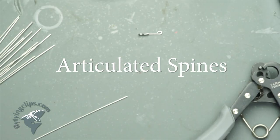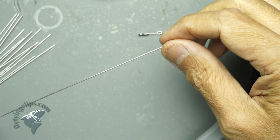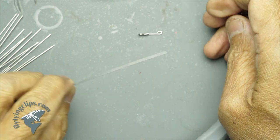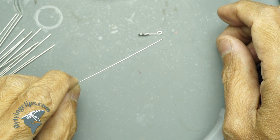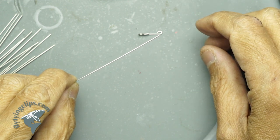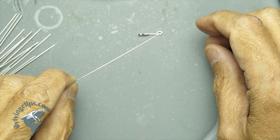I wanted to share with you a way to make your own articulated spines for the game changer. What I have here is stainless steel wire. This is 18 gauge wire or .030.